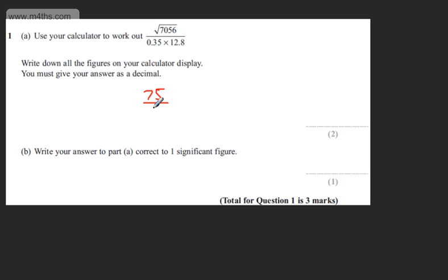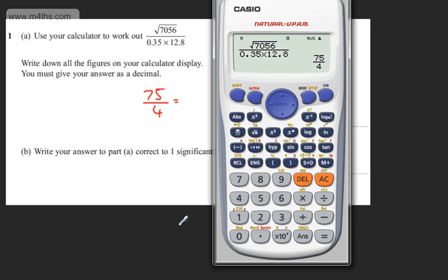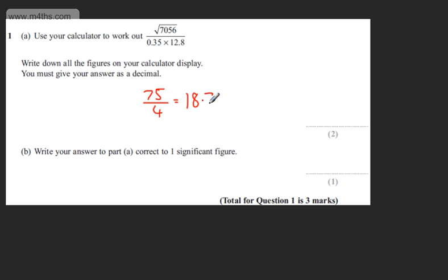75 over 4 is the fraction and we can write this now as a decimal answer. The decimal answer is 18.75. So the answer for two marks is 18.75.